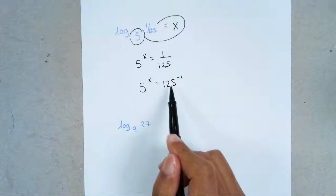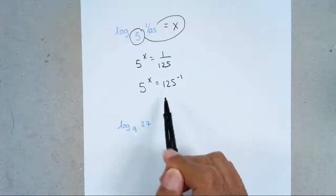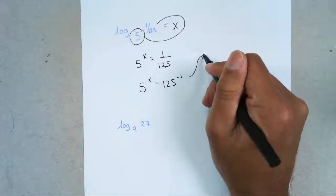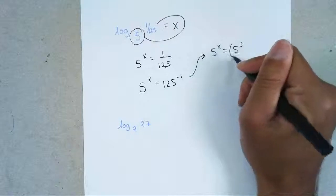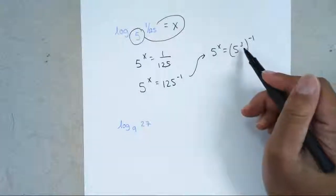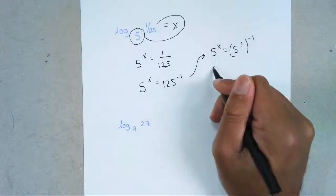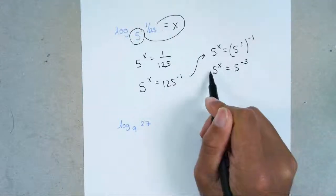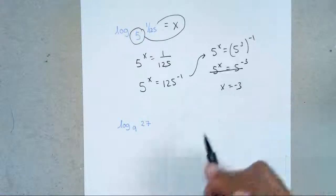Your next step is to make sure that 125 can be broken down to a smaller base. 5 to what power gives you 125? Hopefully you said 5 to the 3rd. So 5 to the 3rd is 125, but don't forget about that negative 1 — leave it there. After you simplify, anytime you have an exponent to an exponent, you multiply them. This gives you 5x equals 5 to the negative 3. Cross these out because they're the same base, and x equals negative 3 — that's your final answer.